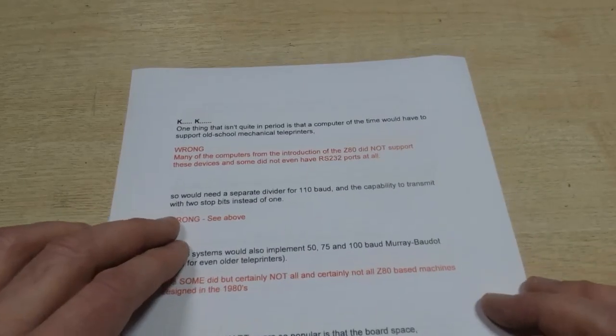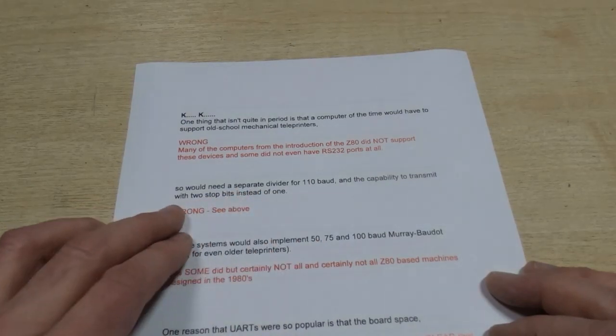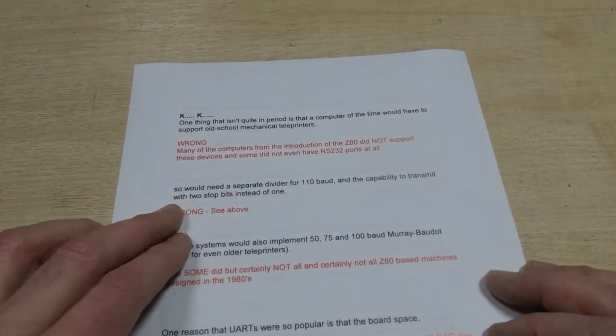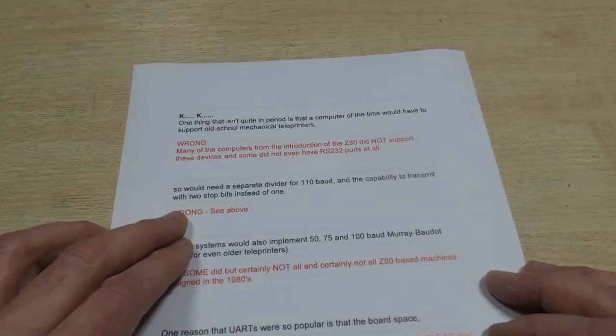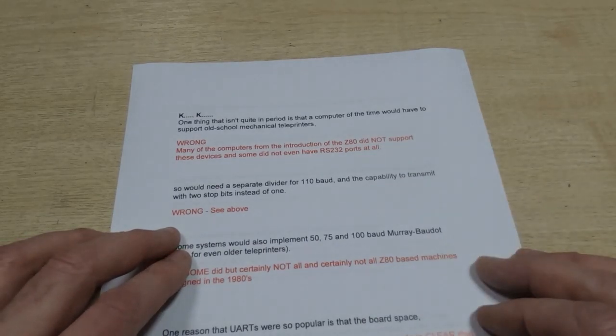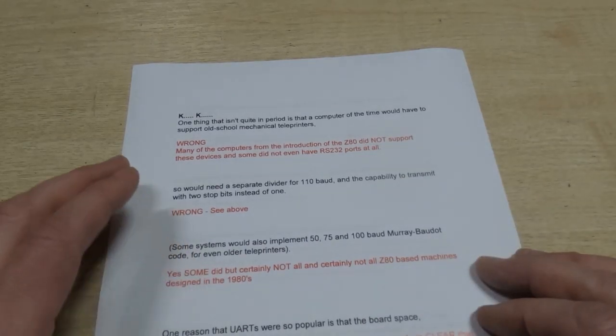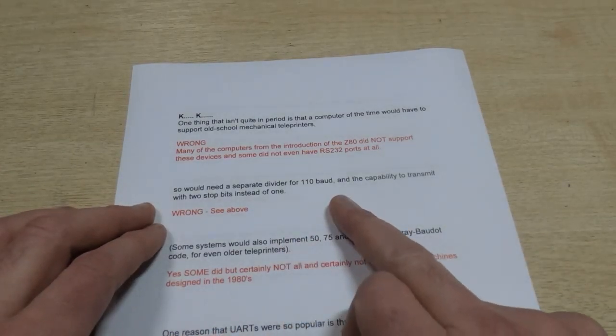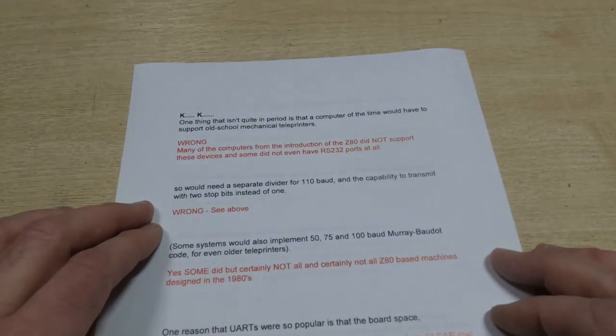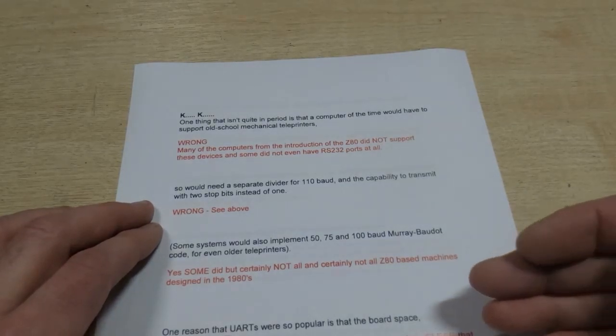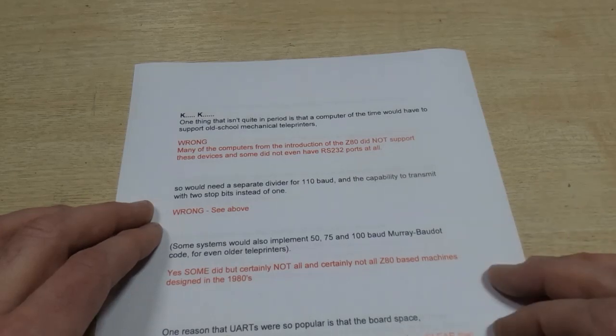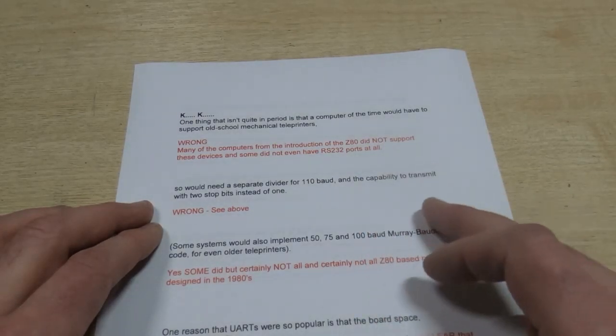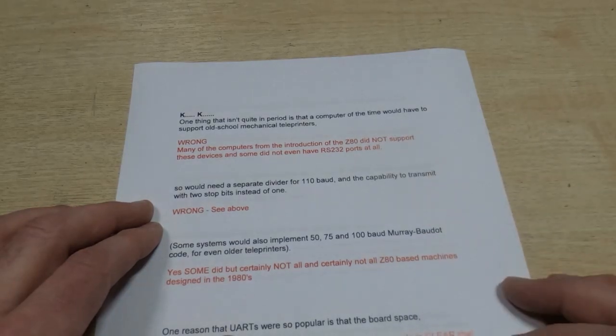The next part of the comments: so would need a separate divider for 110 baud and the capability to transmit with two stop bits instead of one. Completely irrelevant, that's again wrong. The vast majority of the Z80-based computers of this era did not need to support this. It's not so you couldn't include that, and in the project I'm trying to get across that you can design into it whatever support you want.